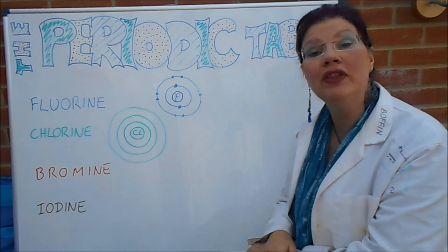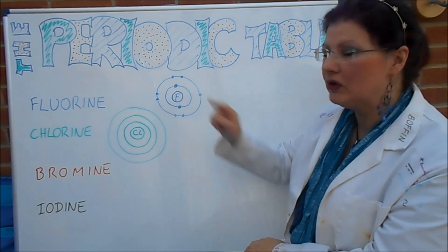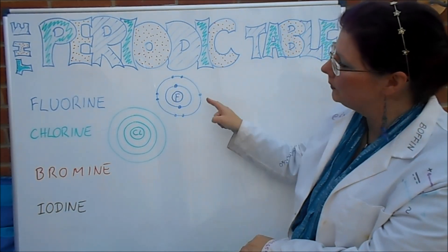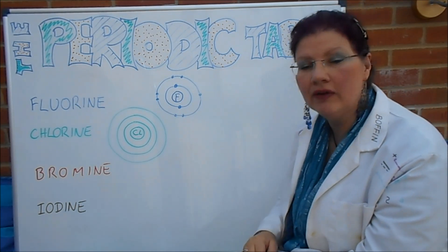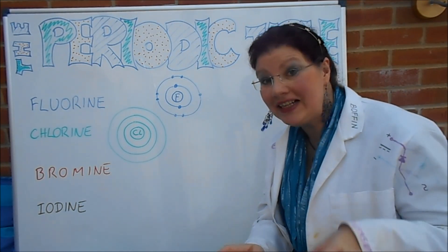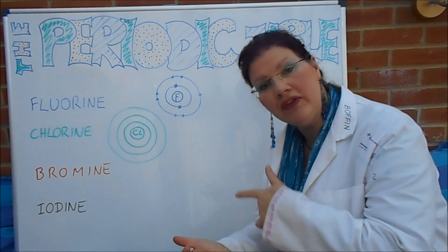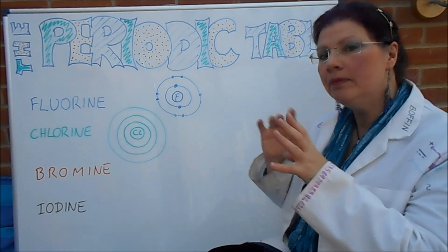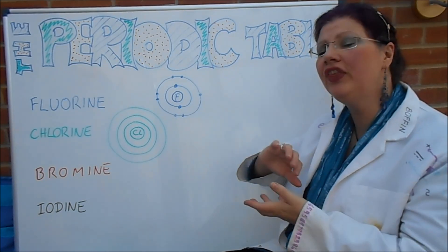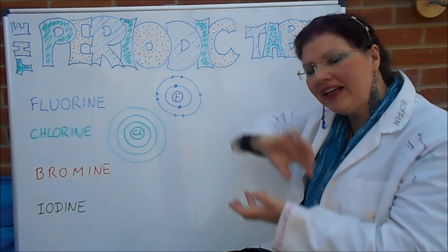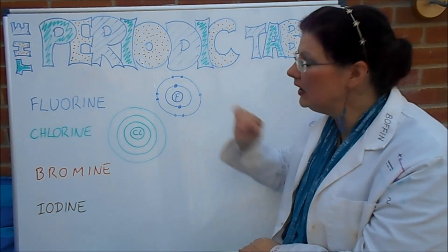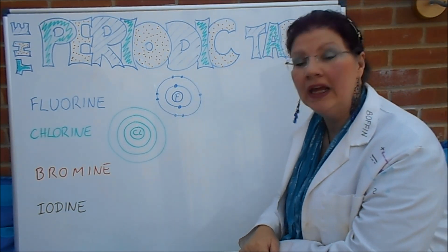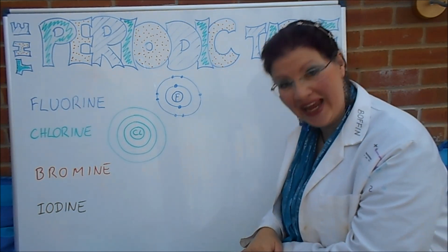So I've drawn up here, I started off with Fluorine. In the middle I've got an F, the chemical symbol, and that's just showing the nucleus, that little inner circle. And then around it, we've got two electron shells. If you don't know about electron shells, then go and check out one of the other Batty Boffin videos on the structure of the atom, because it's really important.